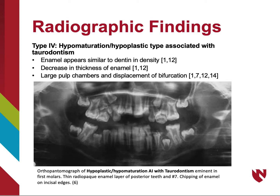In type 4, the enamel appears thinner than normal with a radiodensity similar to dentin. Taurodontism is a developmental anomaly coupled with this type, presenting large pulp chambers and displaced bifurcation of the posterior teeth. The pantomograph illustrates the characteristic features of this type, with taurodontism evident in the first molars.